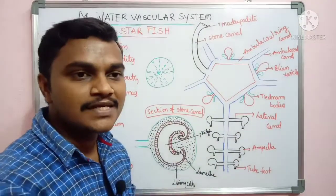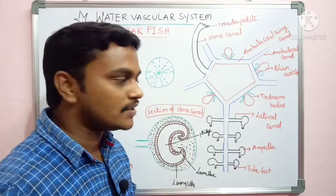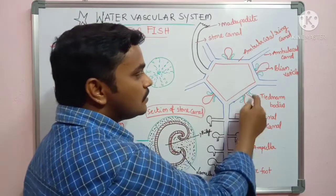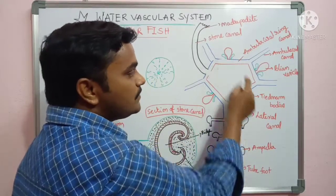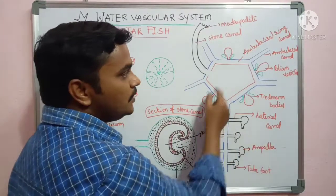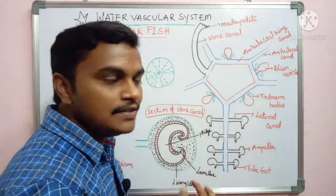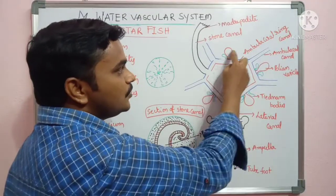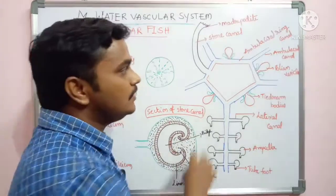If there is excess water, there are some bodies called vesicles. Polian vesicles are paired structures, and these Polian vesicles store the excess water temporarily.